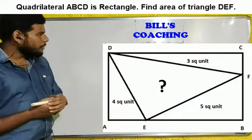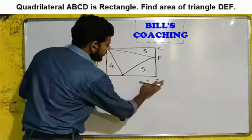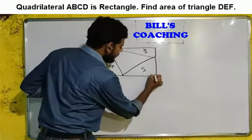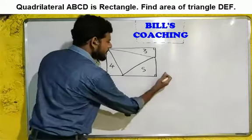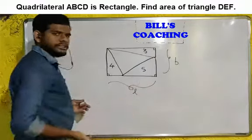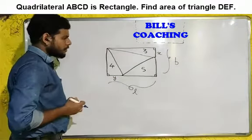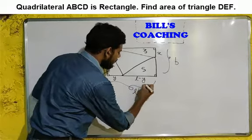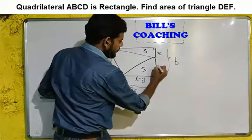So let us begin with the problem. I have drawn the figure here. Since this is a rectangle, I'll mark all four 90-degree angles. I'll mark the full length as L and the breadth as B. I'll mark this segment as X and this one as Y. So this side becomes L minus Y, and similarly this side becomes B minus X. Now we know all the sides.